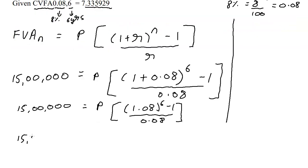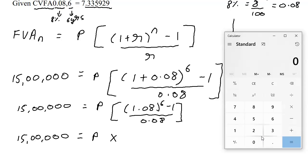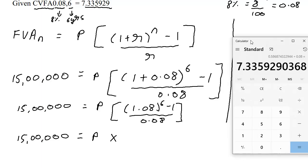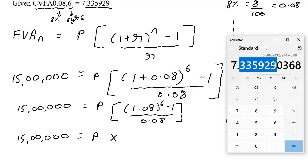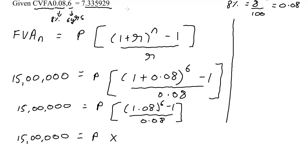So 15 lakhs is equal to the periodic payment into the solution for what's in the bracket. If you have a simple calculator, you simply take 1.08 into 1.08. The moment you press equal to once, it is to the power 2. Keep pressing equal to and count to 6: 3, 4, 5, 6. This is to the power 6. Then we subtract 1, so minus 1, we get this, divided by 0.08, and we get that. Let's see, 7.335929. So one more time, 7.335929, and you know what, that looks like, that's exactly the number that we have here.